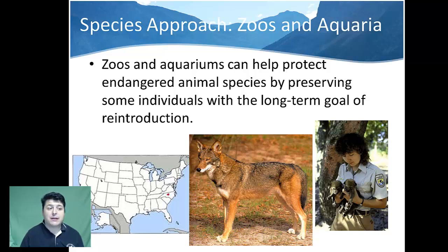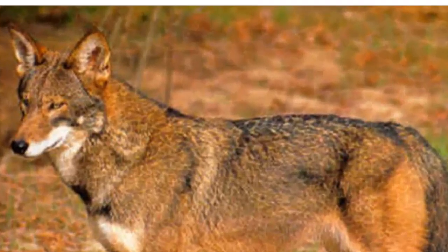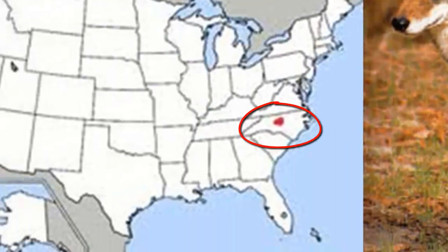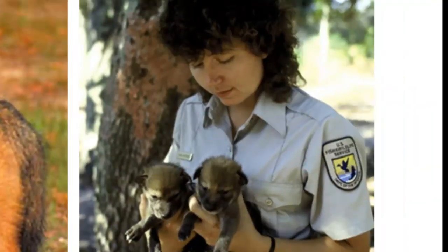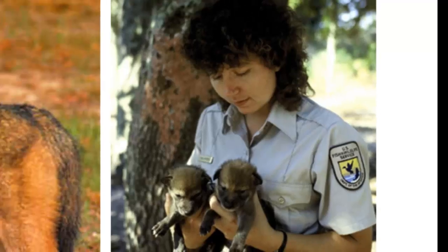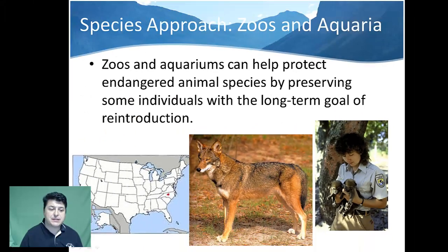Zoos and aquariums can help protect endangered animals under the species approach by preserving individuals with the long-term goal of reintroduction. For example, the red wolf is only found in a small part of North Carolina. Their populations dwindle as a result of habitat destruction, poaching, and accidental death from car impacts. One way to sustain that species is through captive breeding and reintroduction into the wild.